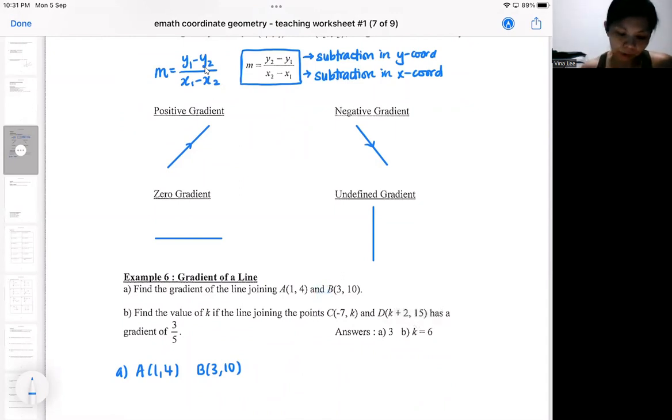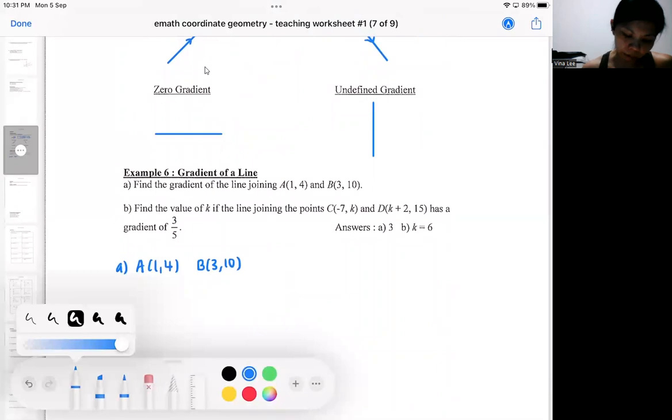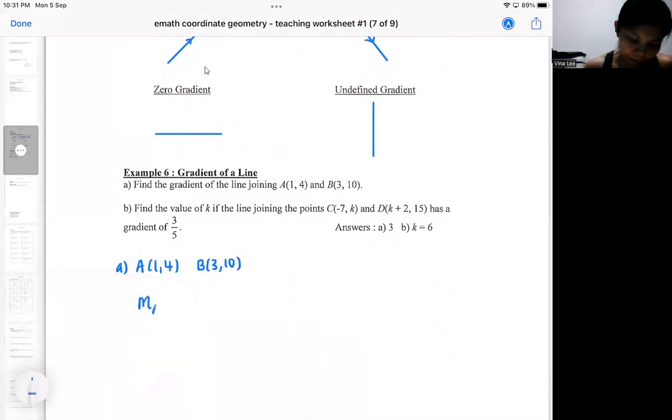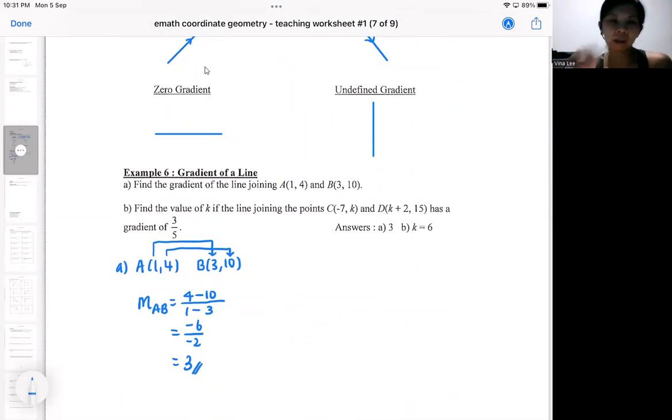To prevent careless mistakes, I actually tell students to do this. I will do the arrow like this. Then you will do a 4 minus 10. You can see the direction of your subtraction. That is to prevent careless mistakes. The gradient is 3. If you use this arrow technique, it will prevent the carelessness in your gradient, which subsequently sometimes can affect a long question.